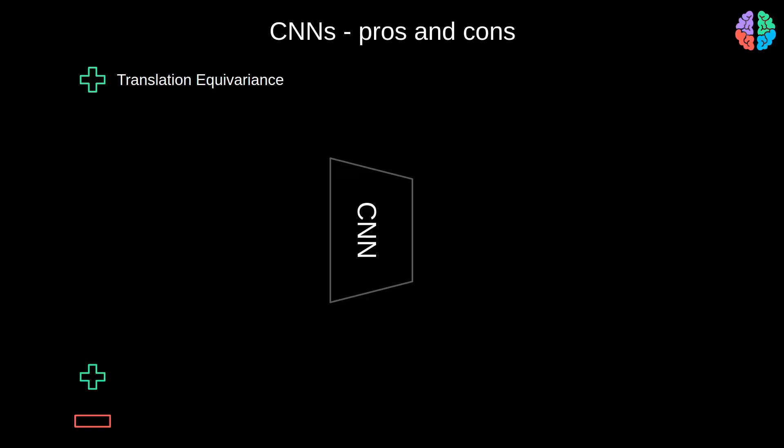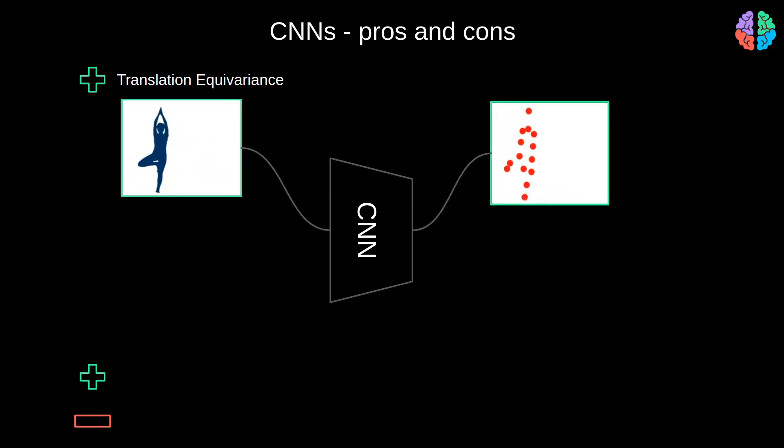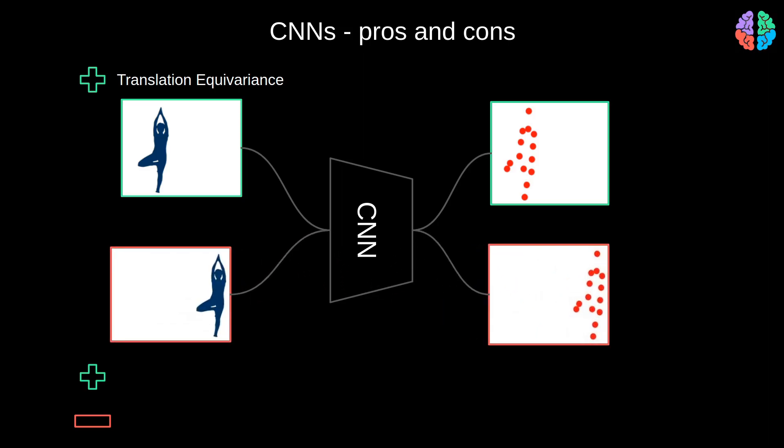CNNs have an incredible property which is translation equivariance. By equivariance, what we mean is that a shift in the input results in an equivalent shift in the output, or more precisely the output features. This is extremely useful to generalize to unseen cases quite well. Using this property, we can train CNNs with relatively less images because we can leverage the power of augmentation.